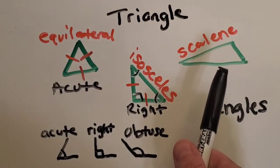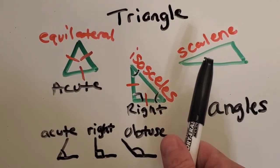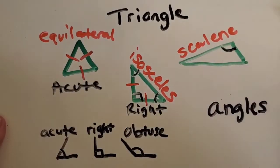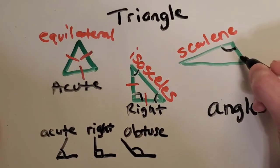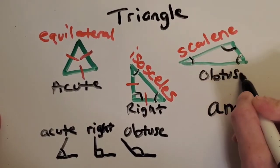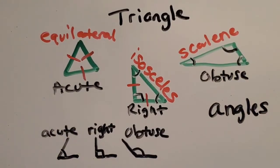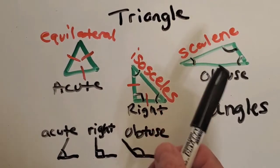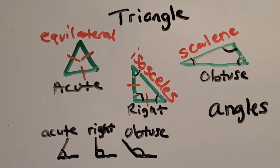Let's move on to the scalene triangle. You can see the different types of angles on it — there's an obtuse angle and then two acute angles. What should we call this one? An obtuse triangle makes the most sense because it has that one special obtuse angle, so we call it an obtuse triangle.